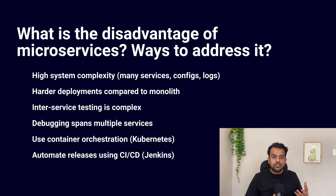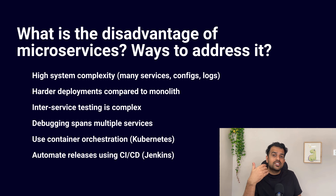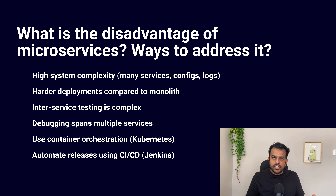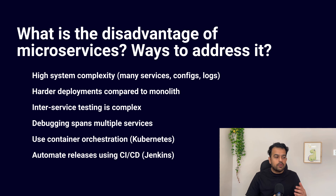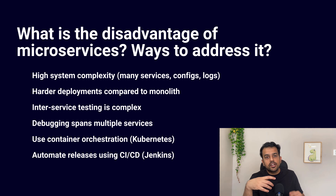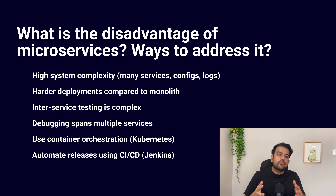Then there is monitoring and troubleshooting, which also gets very difficult. If something goes wrong in production, you cannot just open one log file. You need to trace the flow across multiple services and multiple log files to find out the reason why it failed. To handle these disadvantages, you do not run everything manually. In real projects we use tools and practices — like Kubernetes or another orchestrator to manage containers and services. This helps with deployment, scaling, and restarting failed services. Then we use CI/CD pipelines to automate build, test, and deployment.